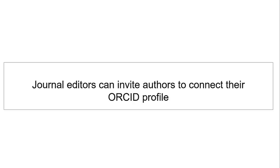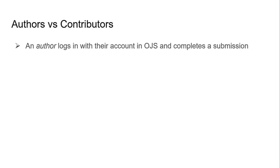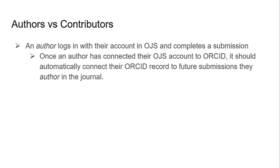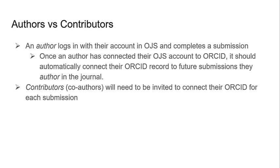Now that the journal has the plugin enabled on their site, the journal editors can invite authors to connect their ORCID profile to their submission in the journal. There are a few options for authors to connect their ORCID profile in OJS. In OJS, an author is the person who logs in with their account and completes a submission. Once an author has connected their OJS account to ORCID, it should automatically connect their ORCID record to future submissions they author in the journal. Contributors in OJS are co-authors. Since they don't log in with their account to submit to OJS, they will need to be invited to connect their ORCID for each submission they make in the journal.